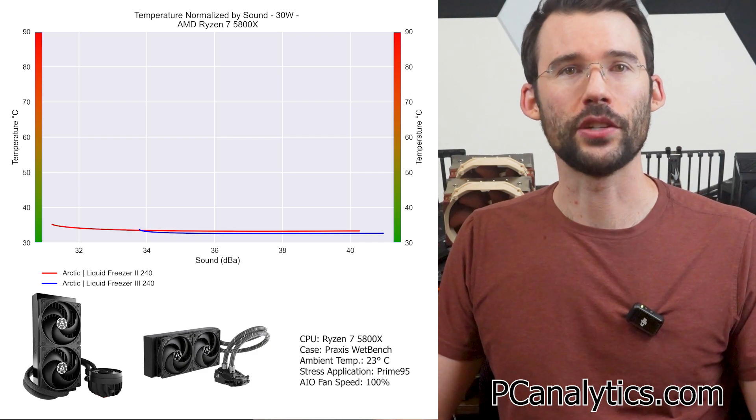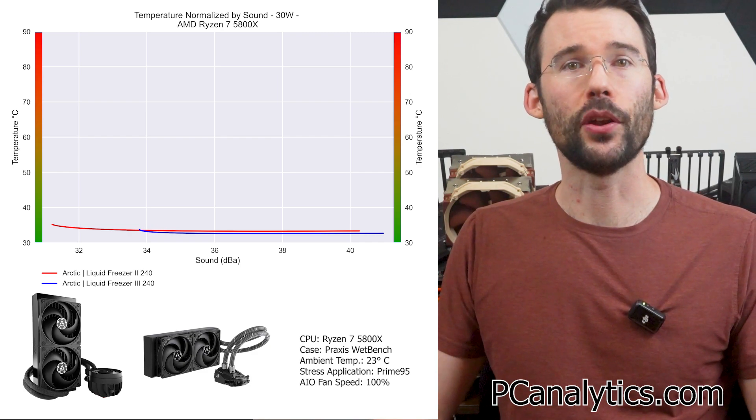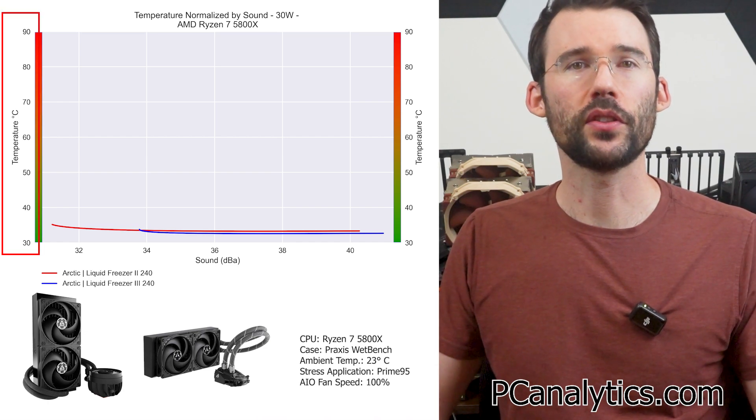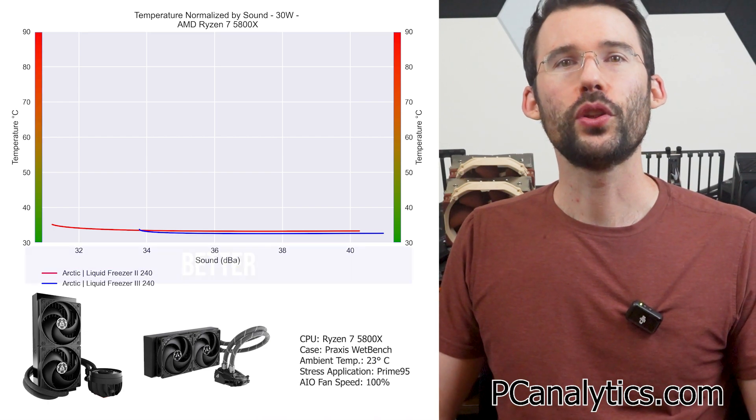Next, we will look at noise normalized charts, but don't forget to hit that like button or subscribe if you're enjoying this content. In our second set of charts normalized by sound, we have temperatures on the left, noise on the bottom, with lower being better.